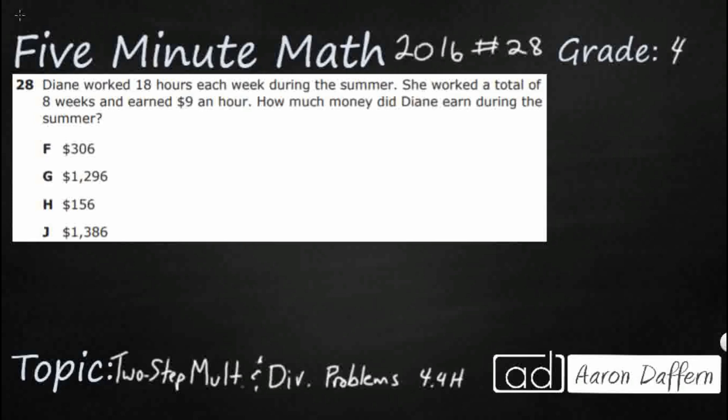So Diane worked 18 hours each week during the summer. She worked a total of eight weeks and she earned nine dollars an hour. So how much money did she make during the summer? That's three different numbers. We're going to have to figure out what to do with all three of them. So we need to find the amount of money. All of our answers here have dollar signs, so that's good. But we don't know how much she's worked yet.